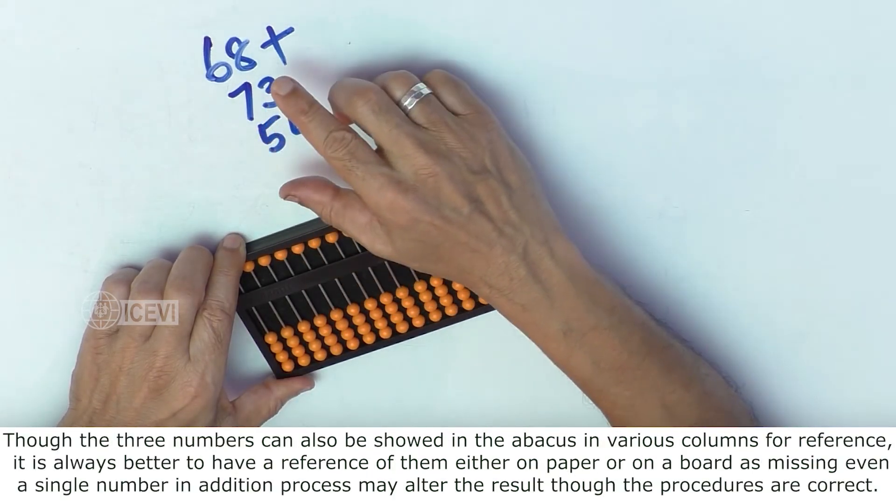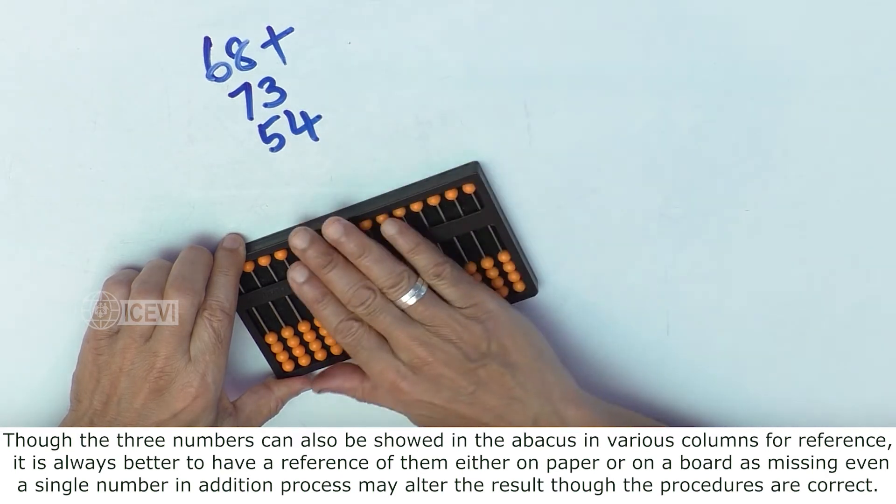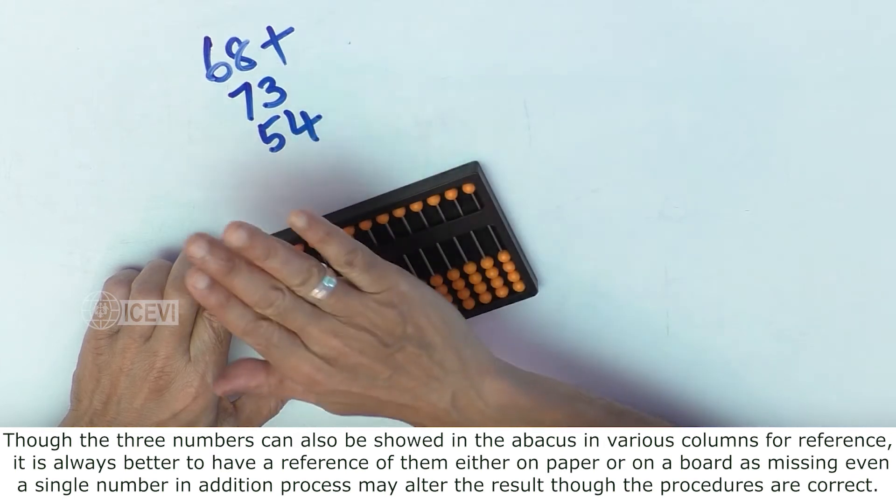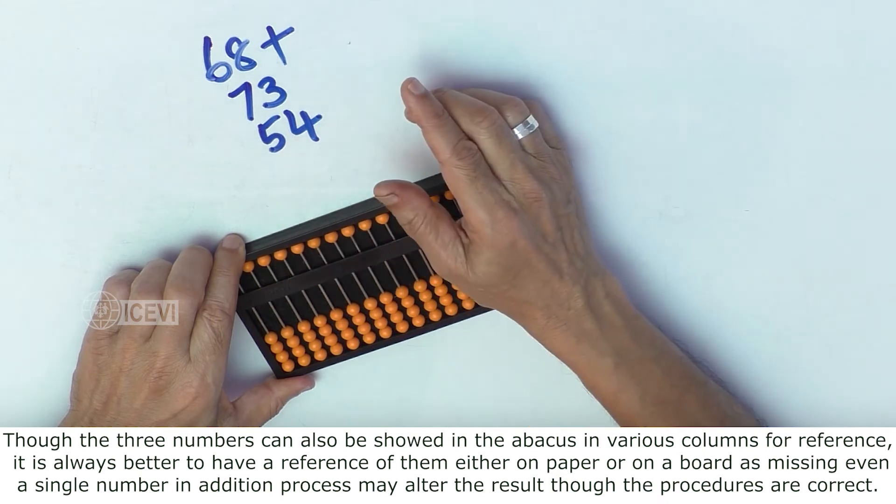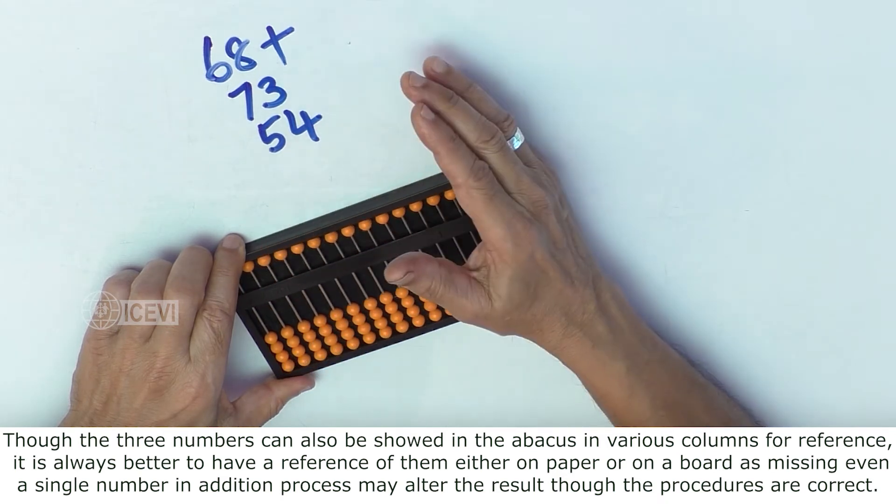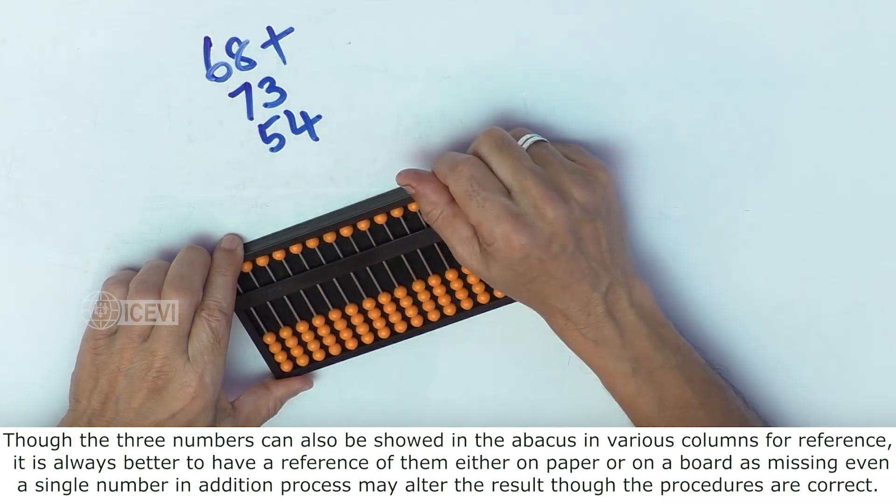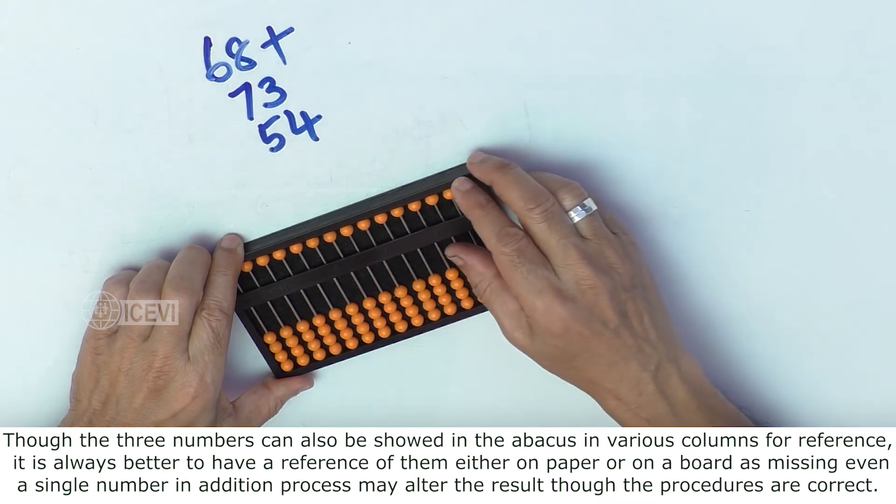Though the three numbers can also be shown in the Abacus in various columns for reference, it is always better to have a reference of them either on paper or on board, as missing even a single digit number in the addition process may alter the result though the procedures are correct.